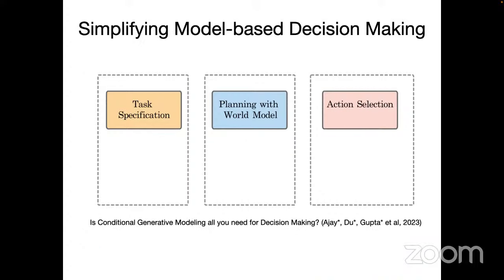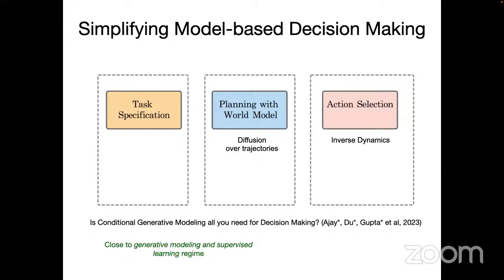The first paper we'll talk about is 'Is Conditional Generative Modeling All You Need for Decision-Making?' Our main idea is to take the scaffold normally used in model-based reinforcement learning and replace it with generative modeling or supervised learning counterparts that are much easier to train. Instead of planning over a world model, we propose learning a diffusion model that captures trajectories in the environment, serving as the world model.